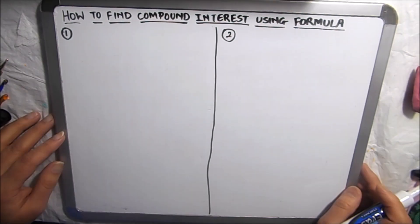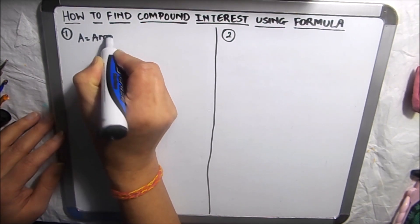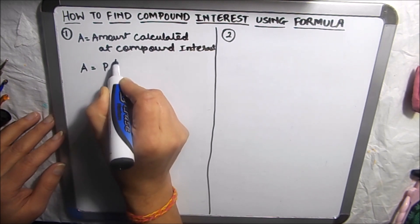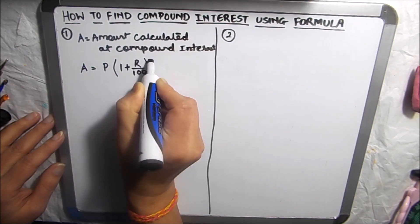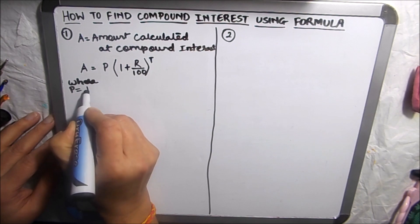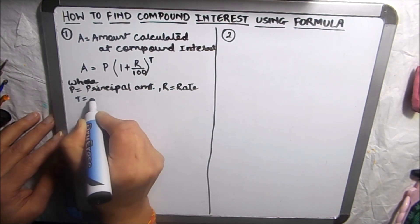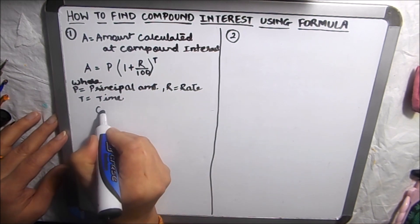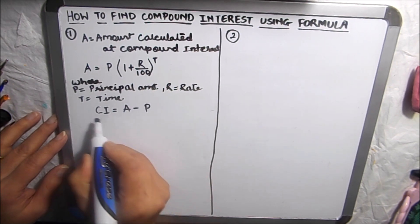The formula to find the amount is: Amount = P × (1 + R/100)^T, where P is the principal amount, R is the rate of interest, and T is the time in years. After finding the amount, we need to find the compound interest, which is the amount minus the principal amount. This is our formula to find compound interest.